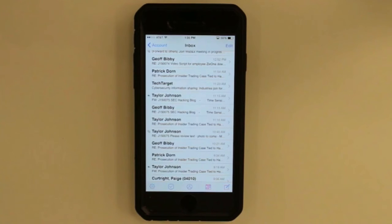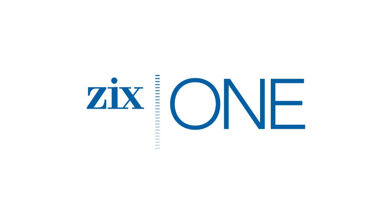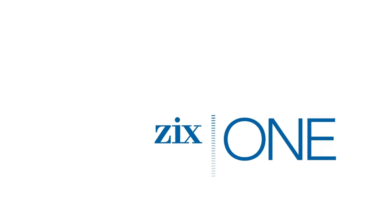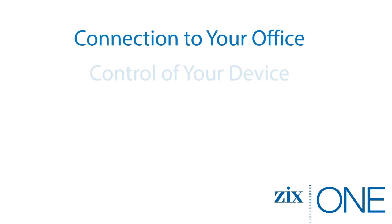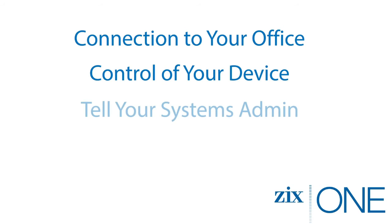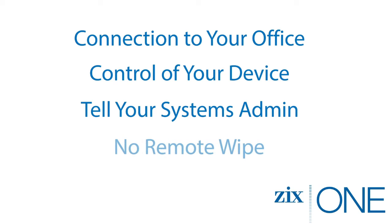Before I go, I'd like to tell you some of the good reasons your organization has chosen the ZixOne application for you. Firstly, ZixOne gives you a connection to the office and allows you to keep control of your device. If you lose your device, report the loss to your employer. The admin will simply disable access to ZixOne from that device. There is no device remote wipe, which means that if you find your device, all of your personal data, photos, videos and the like will still be there. Just notify your admin again and ZixOne will be accessible again.